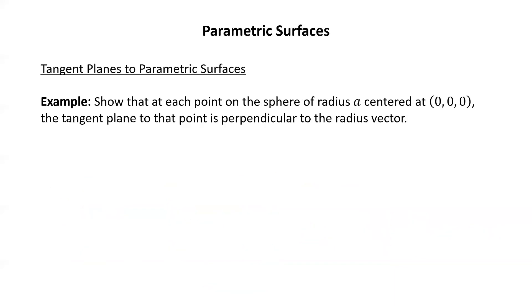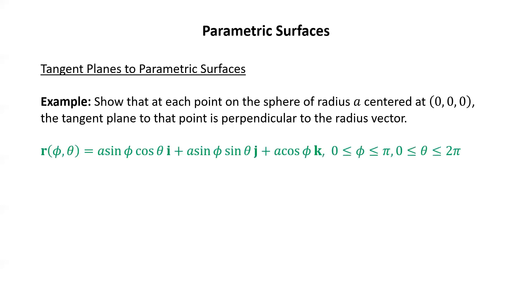Another example: show that at each point on the sphere of radius a centered at (0,0,0), the tangent plane to that point is perpendicular to the radius vector. As a hint, you may want to parametrize the sphere using spherical coordinates. We parametrize the sphere with r of (phi, theta) equals a sine phi cosine theta i plus a sine phi sine theta j plus a cosine phi k, where phi goes between 0 and pi and theta goes between 0 and 2 pi. Let's take the cross product of the partials.